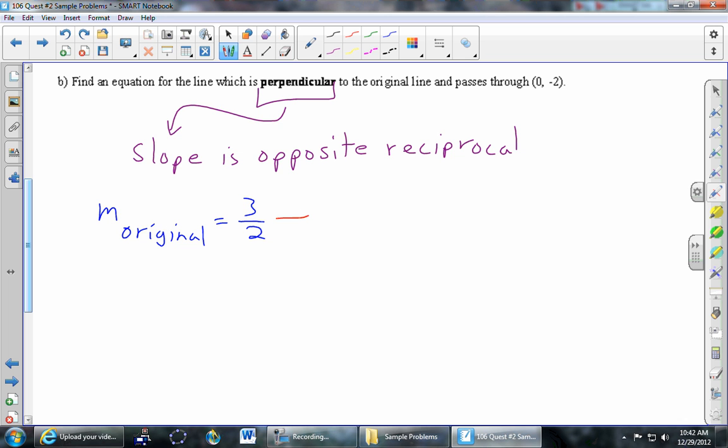And what we're interested in is the slope not of the parallel line but of the perpendicular line. And the slope of the perpendicular line is the opposite reciprocal of that blue number, the 3 halves. So opposite makes it negative. Reciprocal makes it 2 thirds. So the slope of the perpendicular line is negative 2 thirds.